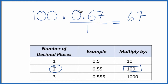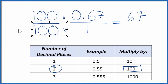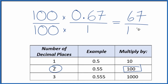But I can't just multiply the numerator by 100 — I also have to multiply the denominator. That's because 100 over 100 equals 1, so we're multiplying by 1 and not changing the value, just the way it's represented. 100 times 1 is 100, and now we have our fraction: 67 over 100. So the decimal 0.67 is equal to the fraction 67 hundredths.